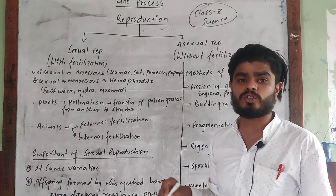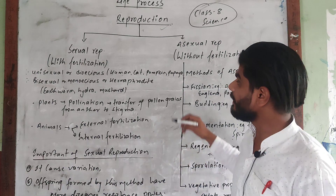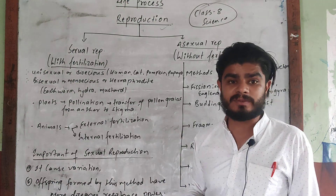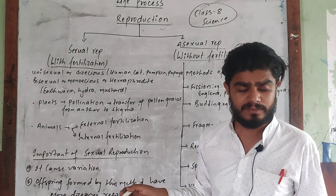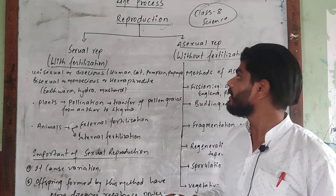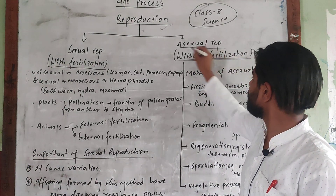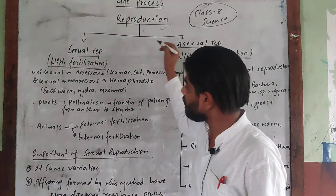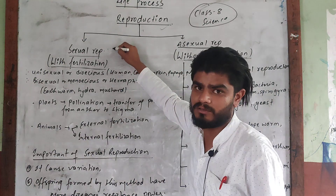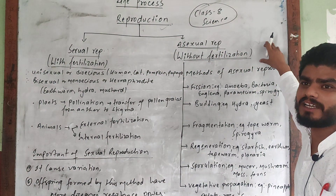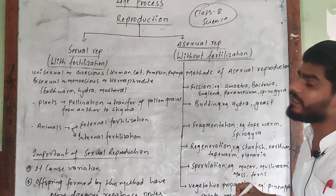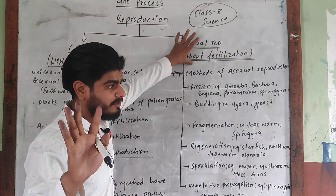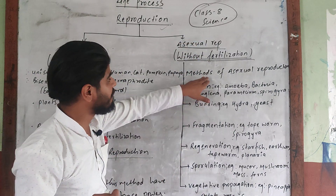Reproduction can be categorized into two types. Without fertilization, it is called asexual reproduction. With fertilization, it is called sexual reproduction. So, asexual reproduction means reproduction without fertilization. There is a definition for asexual reproduction.